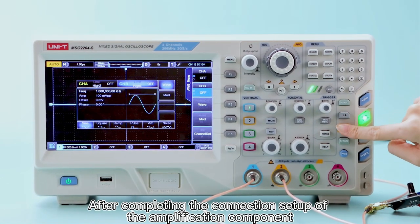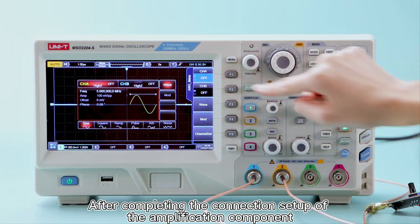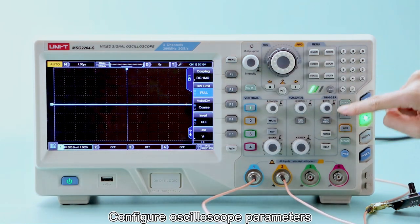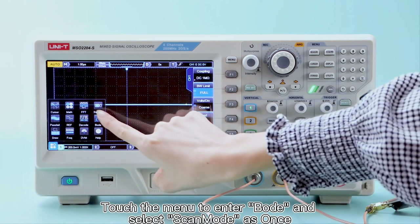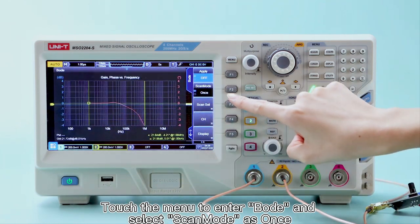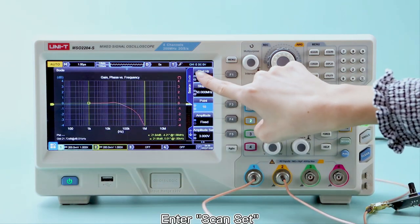After completing the connection setup of the Amplification Component, configure oscilloscope parameters. Touch the menu to enter board and select Scan Mode as once. Enter Scan Set.